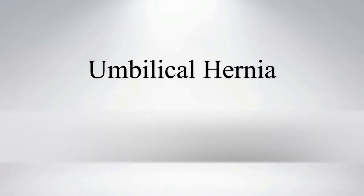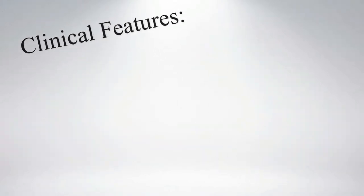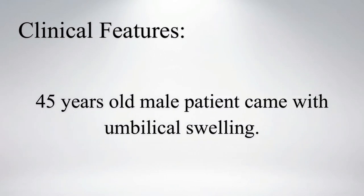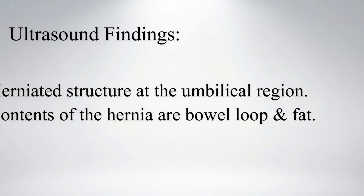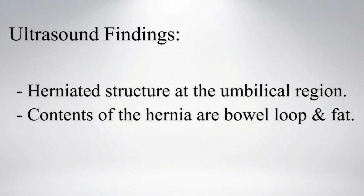Hi everyone, let's see a case of umbilical hernia. A forty-five-year-old male patient came with a swelling at the umbilical region. On ultrasound, a herniated structure is noted at the umbilical region. The contents of the hernia are bowel loop and fat.